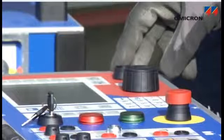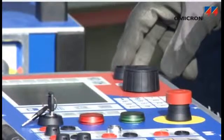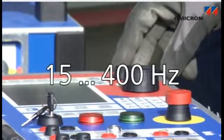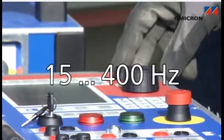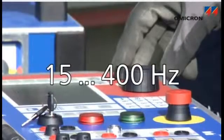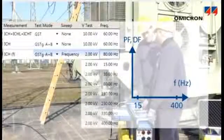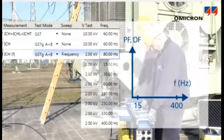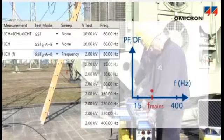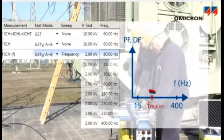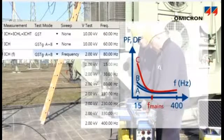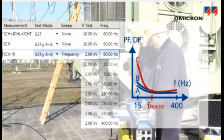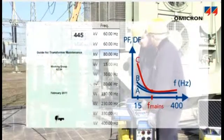The CPC100 and CPTD1 can cover a wide frequency range, from 15 to 400 Hz. Performing these measurements at several frequencies, rather than at mains frequency only, provides more comprehensive diagnostic information. Hence, it has been recommended by CIGRE.